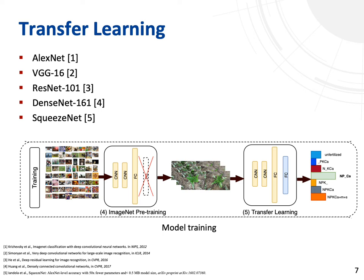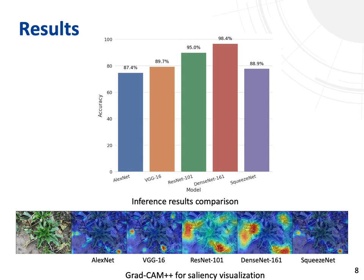To evaluate how accurate RGB image-based nutrient deficiency detection can be, we analyze and compare five neural architectures, including AlexNet, VGG, ResNet, DenseNet, and SqueezeNet. All models are pre-trained on ImageNet and fine-tuned on our dataset.